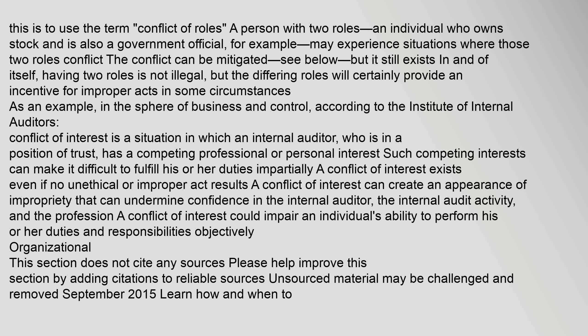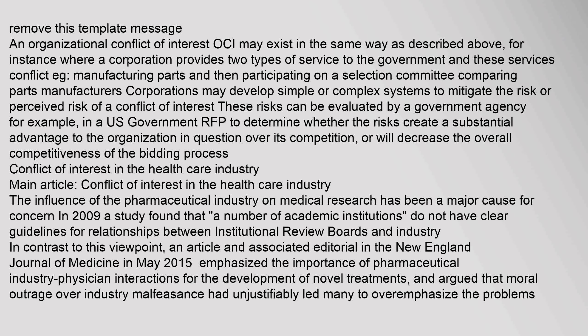An organizational conflict of interest (OCI) may exist in the same way as described above. For instance, where a corporation provides two types of service to the government and these services conflict — such as manufacturing parts and then participating on a selection committee comparing parts manufacturers. Corporations may develop simple or complex systems to mitigate the risk or perceived risk of a conflict of interest. These risks can be evaluated by a government agency, such as in a U.S. government RFP, to determine whether the risks create a substantial advantage to the organization in question over its competition.